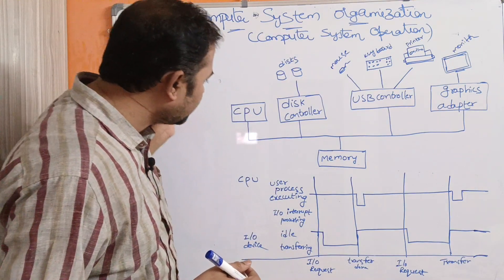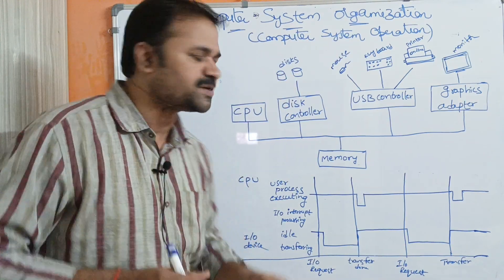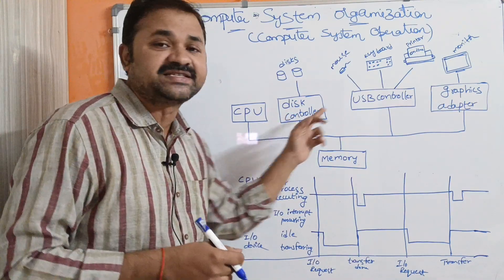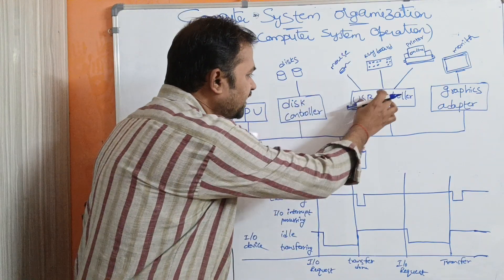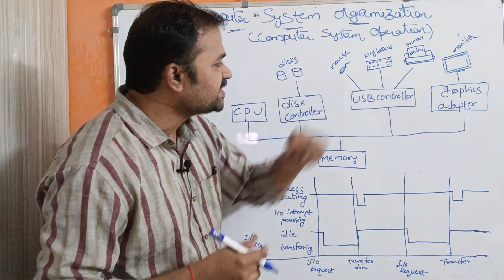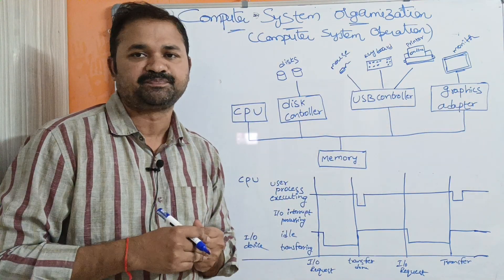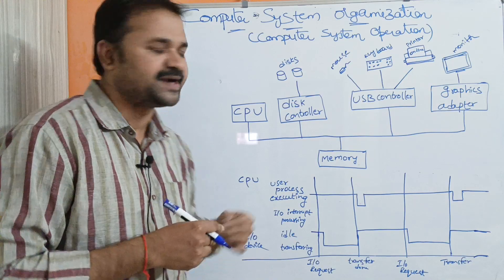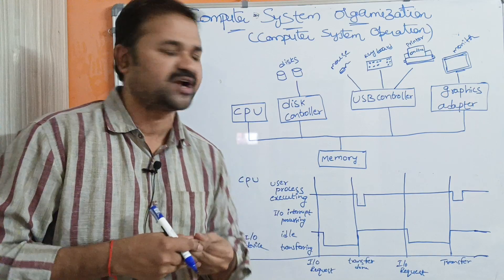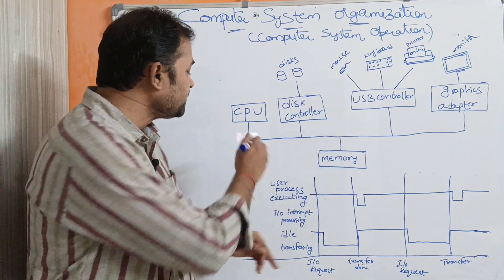This is the block diagram for a modern computer system. A modern computer system contains one or more CPUs and device controllers. So all these — disk controller, USB controller, and graphics adapter — are nothing but device controllers, connected through a common bus system.